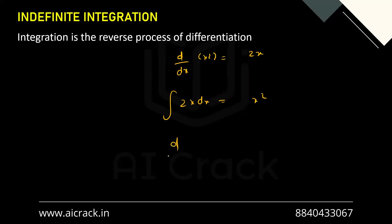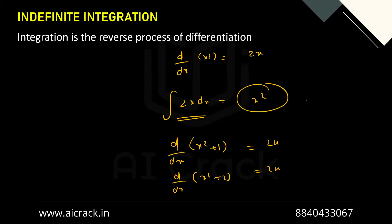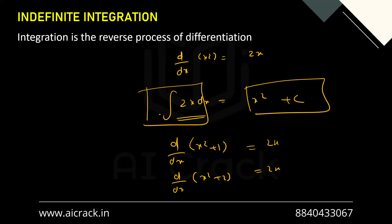If we differentiate d/dx of x²+1 and d/dx of x²+2, we'll still be getting 2x. So the integral of 2x should not be x² only — it can be x²+1 or x²+2. So we have to add one constant, the constant of integration. This is applicable for indefinite integration. In definite integration we have certain limits, so we won't need this constant.